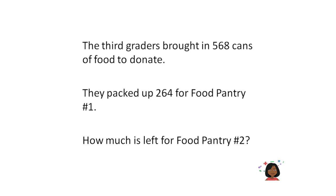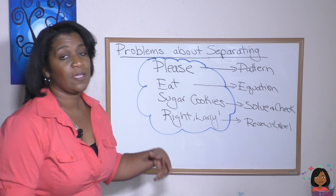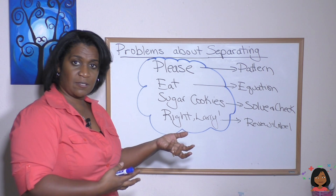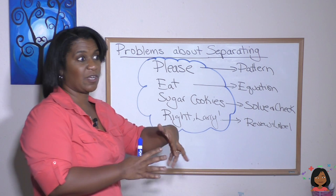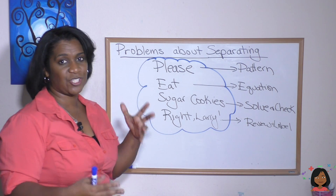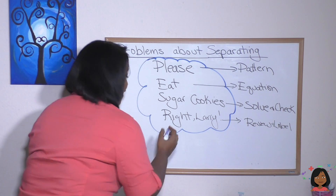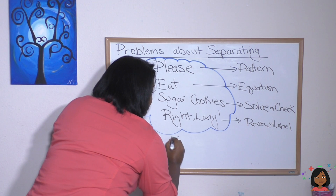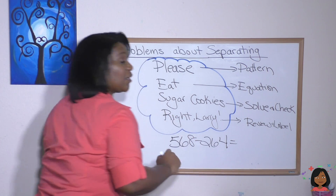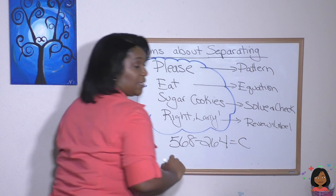The third graders brought in 568 cans of food to donate. They packed up 264 for food pantry number one. How much is left for food pantry number two? The P — please — stands for pattern. They brought in a certain amount of food cans, they packed up some of them so some went away, and they want to know what is left — what remains. That sounds like a subtraction pattern. For E — equation — there were 568 cans to start, they packed up 264 cans, and we want to know what remains. We don't know, so I'm going to call that C. That's our equation: 568 minus 264 equals C.